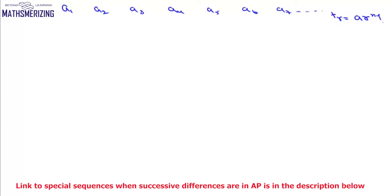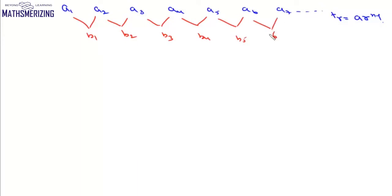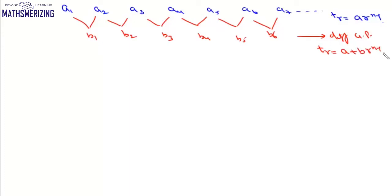Now suppose the sequence is not in GP. We find their differences b1, b2, b3, b4, b5, b6. If this difference series is in GP, then its nth term is given by a plus b into r to the power n minus 1.